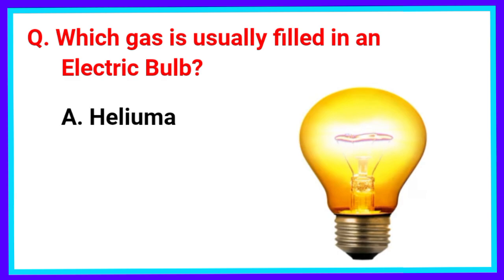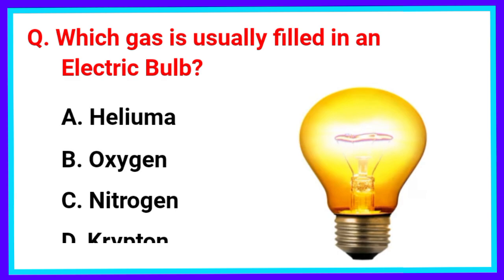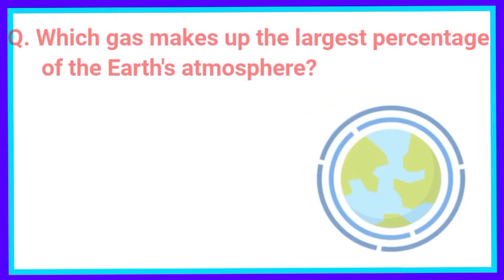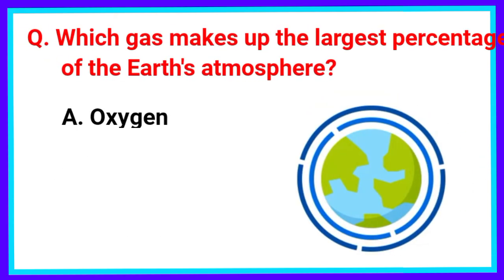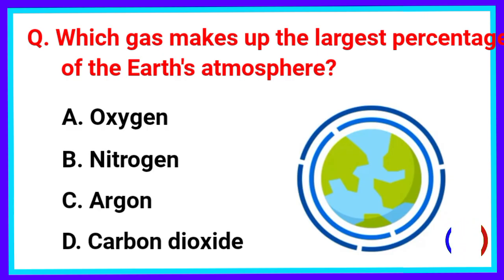Which gas is usually filled in an electric bulb? The correct answer is Option C. Nitrogen. Which gas makes up the largest percentage of the Earth's atmosphere? The correct answer is Option B. Nitrogen.